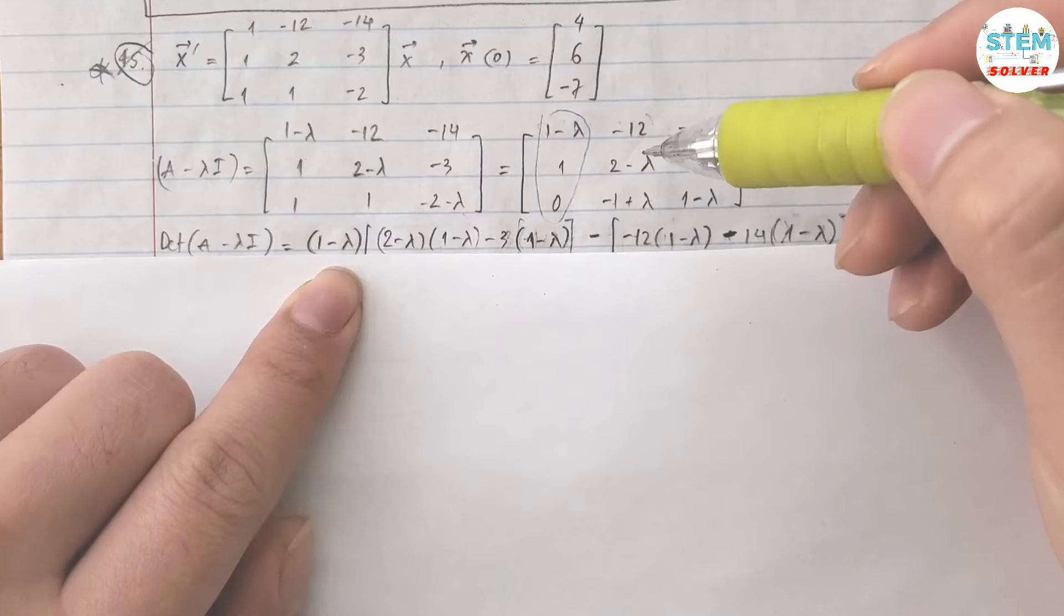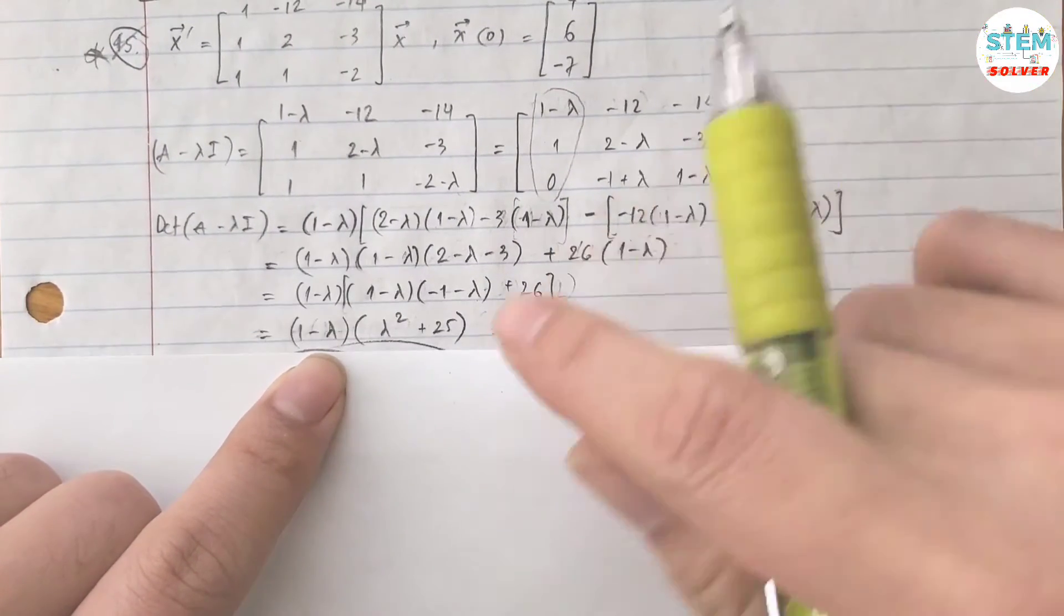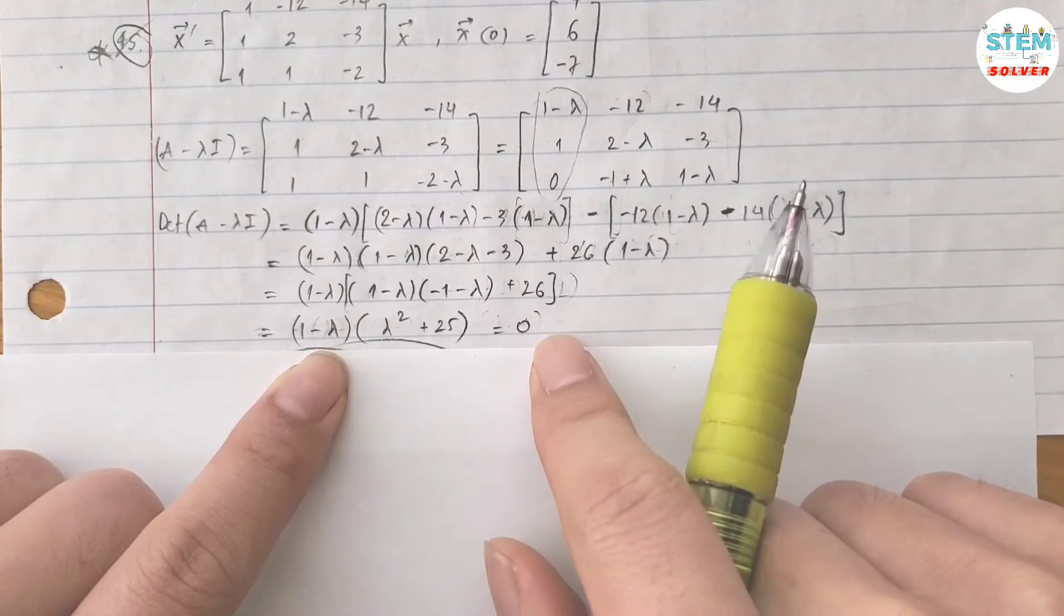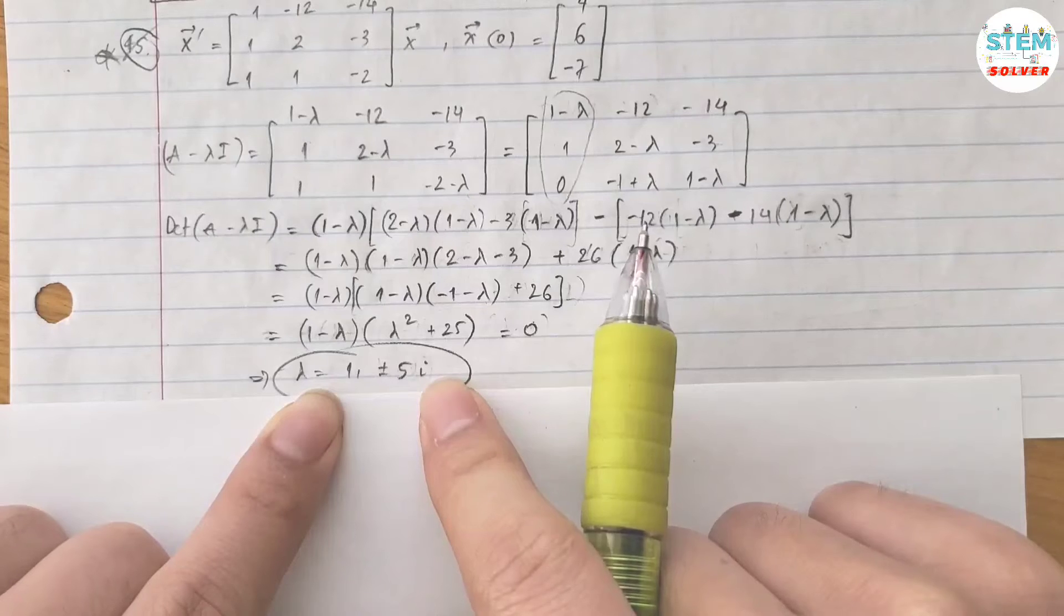And then you are going to find its determinant, which leads you to this one. Set this equal to zero. So for lambda, that gives you lambda equals one and positive and negative five i.